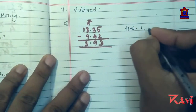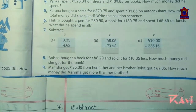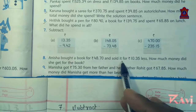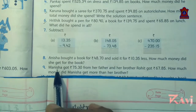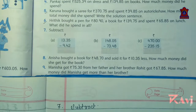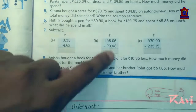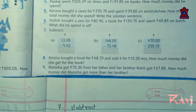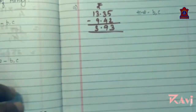Question number b and c you will do by yourself. Now let's move to question number eight: Anisha bought a book for rupees 48.70 and sold it for rupees 10.35 less. How much money did she get for the book? She sold it 10.35 less — that means you need to subtract 10.35 from 48.70 to find the actual selling price.